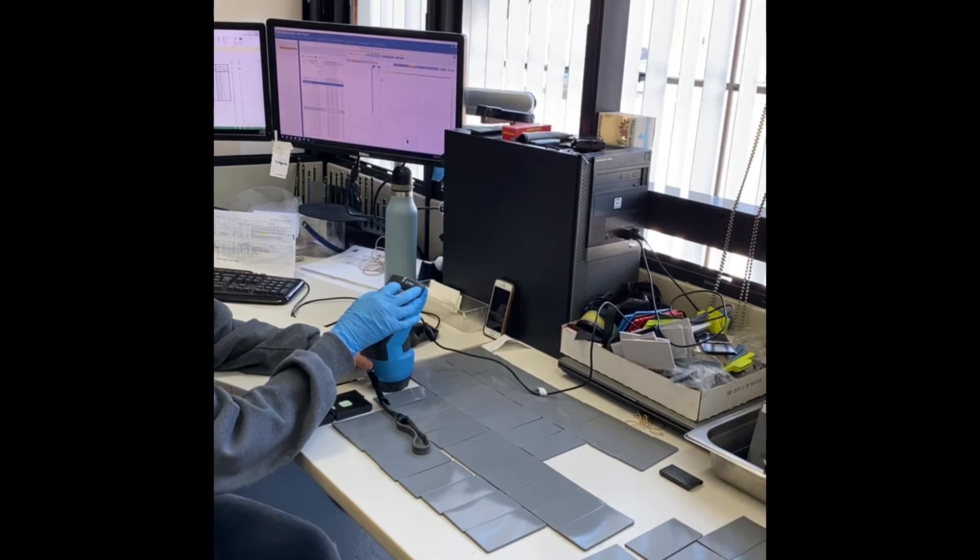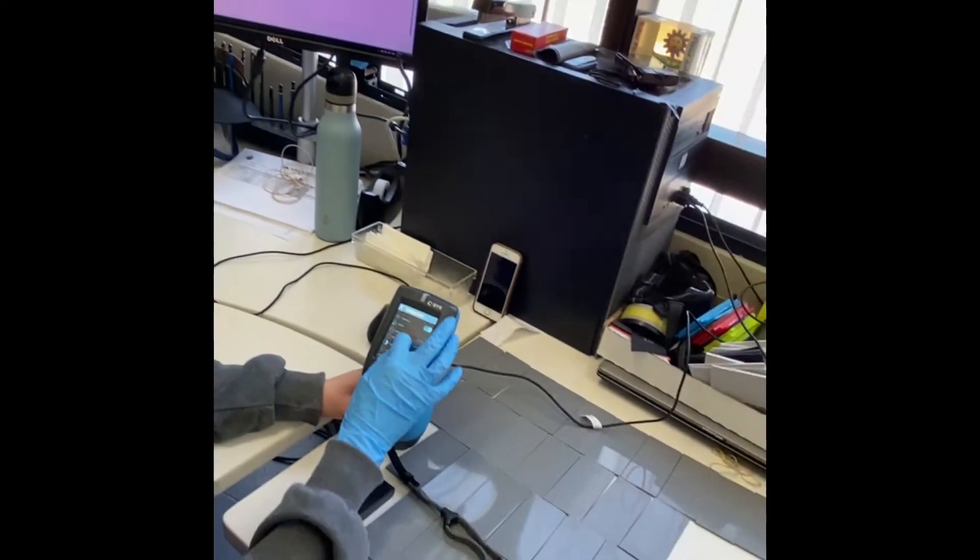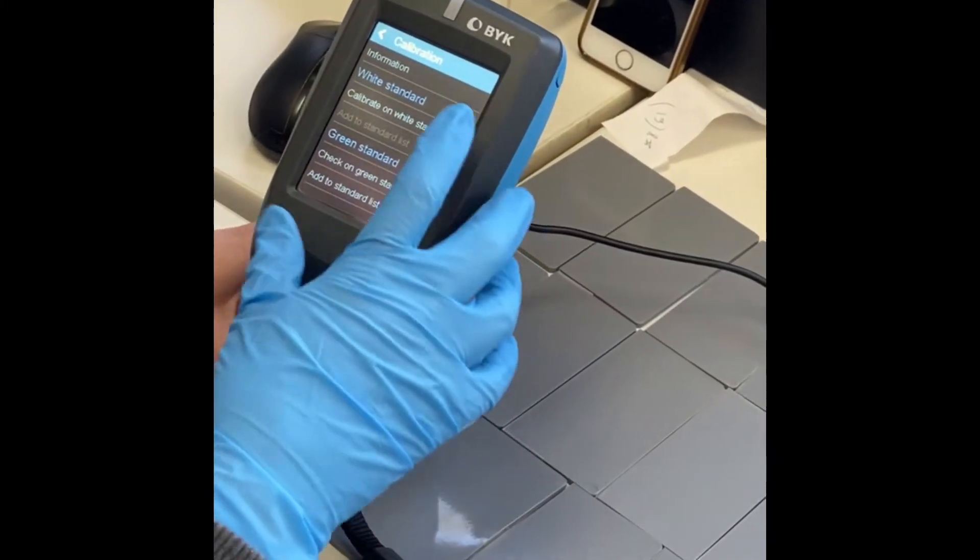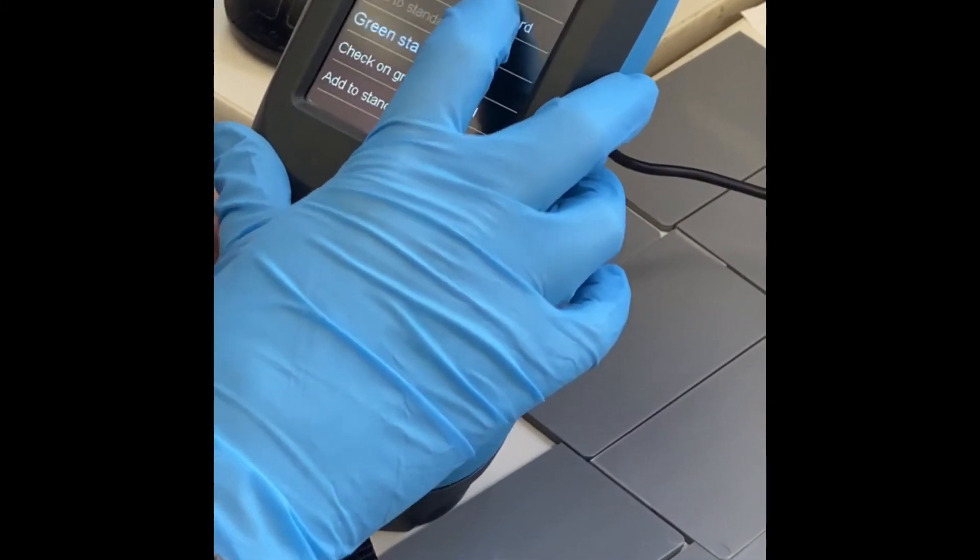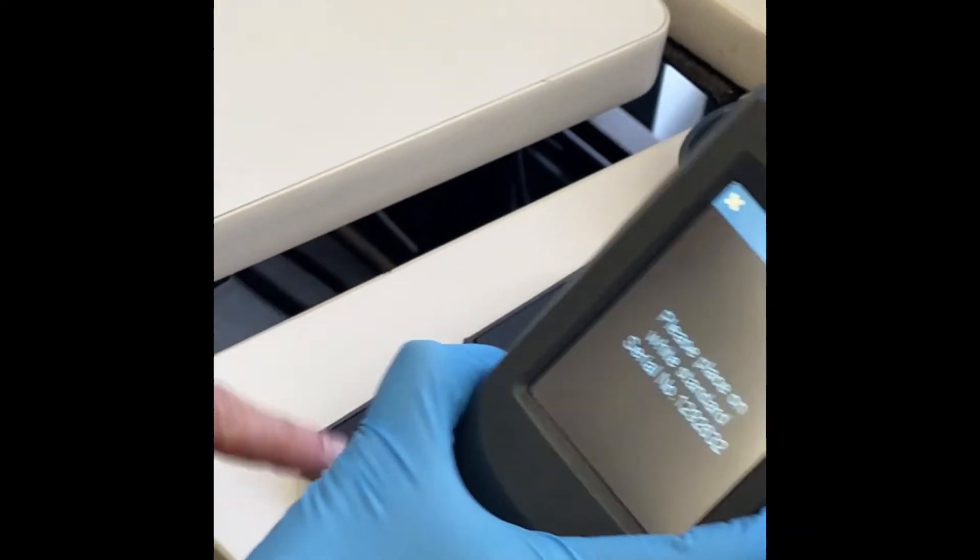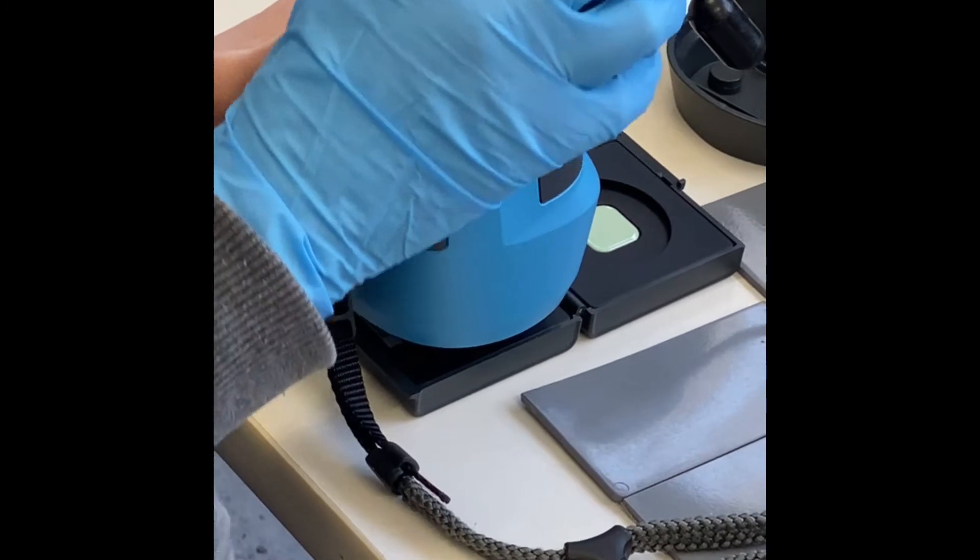I go to the settings, and then I choose the calibration and then calibrate on white tile. And then it asks me to place it on the white tile, that's the number here, and then I just push the check mark.